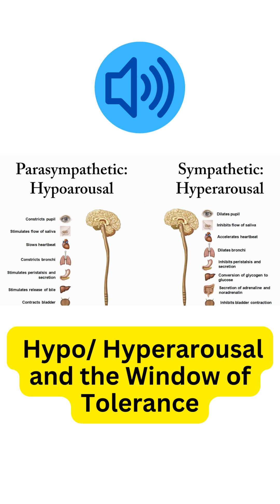On the left side of your screen you're looking at an image of hypoarousal. That's what happens when the parasympathetic nervous system is dominant — the heartbeat slows down, saliva flows, the pupils constrict. This is what happens when somebody becomes more and more relaxed, but the difference between simply being relaxed and hypoarousal is that when somebody is hypoaroused, their body is beginning to shut down.